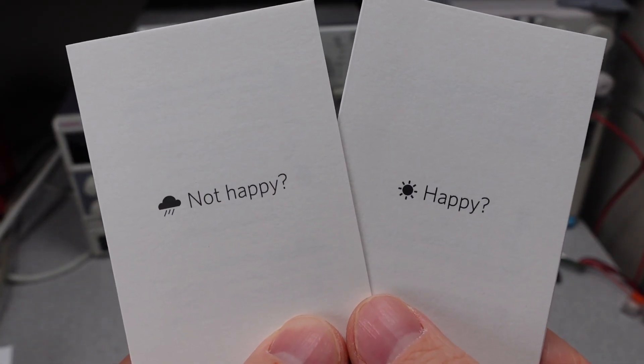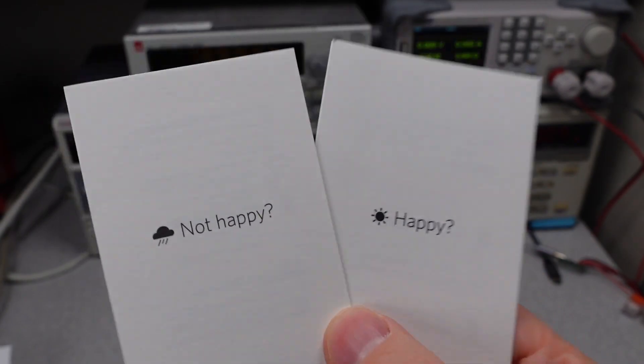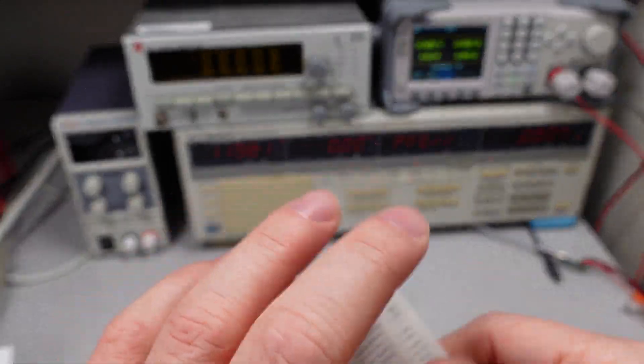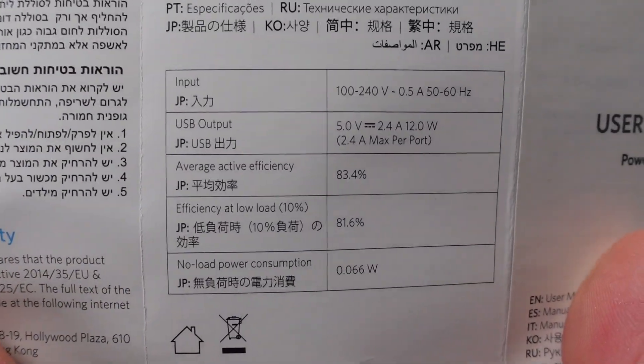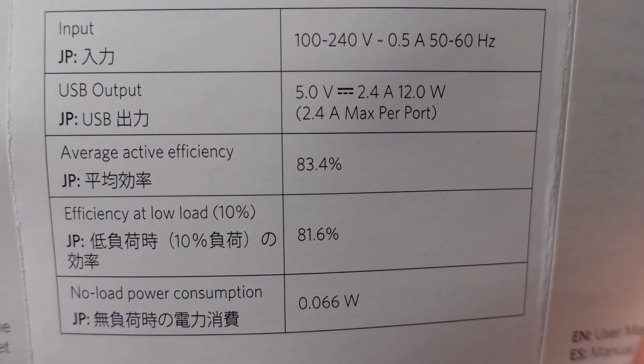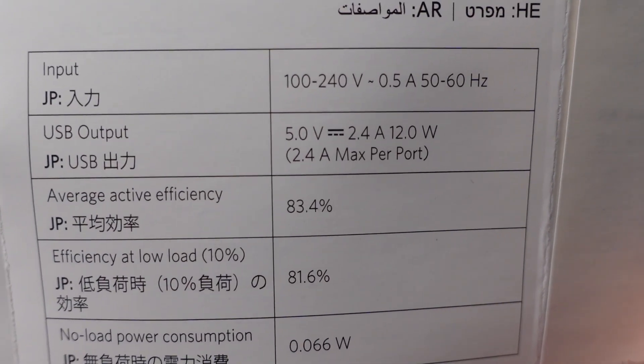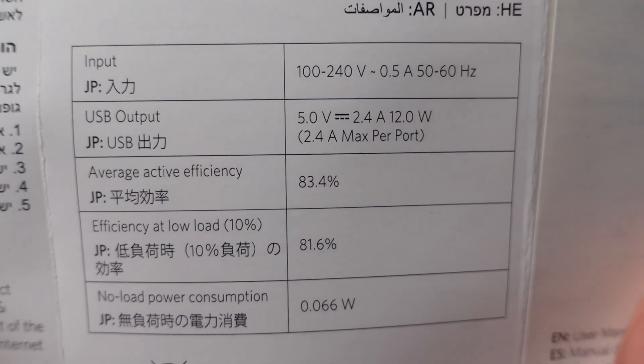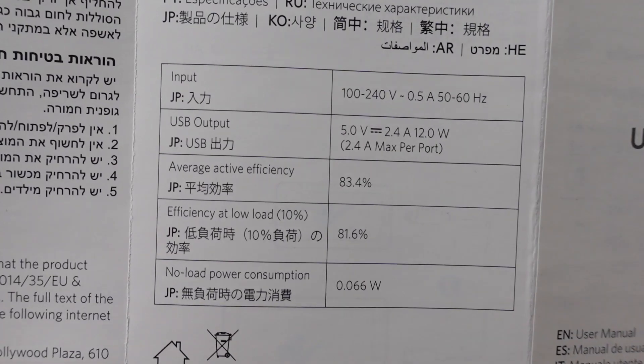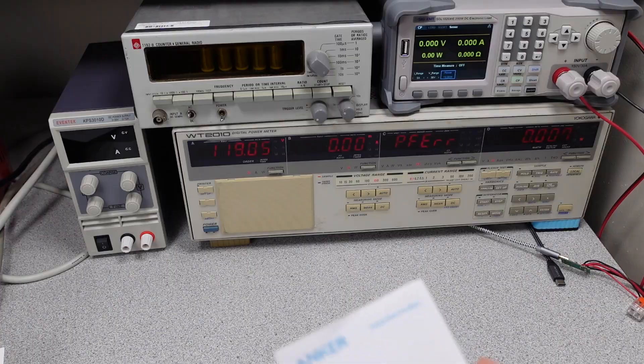So we get the obligatory happy-not-happy cards. Soon enough, I'm going to have enough of these around my house to wallpaper something. So the PowerPort Mini manual, they give us something very different that we haven't seen before. Efficiency at low load? No load power consumption? Average active efficiency? What? Actual specifications in a user manual? So yeah, we're going to have to verify all these numbers.